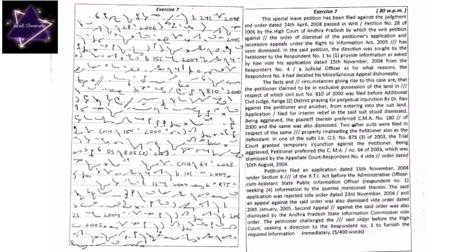In the said petition, the direction was sought by the petitioner to the respondent number 1 to provide information as asked by him via his application dated 15th November 2004 from respondent number 4, a judicial officer, as for what reasons respondent number 4 had decided his miscellaneous appeal dishonestly.